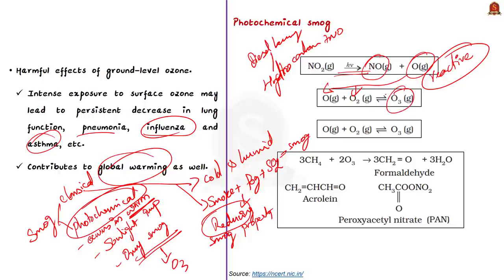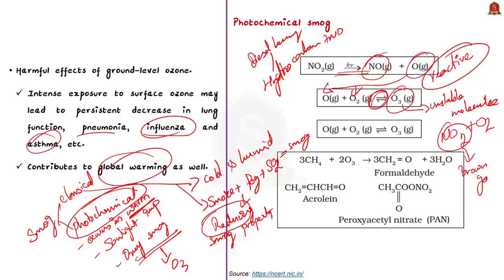Ozone is an unstable molecule, so it can disintegrate back into oxygen. This makes ozone a potential oxidizing agent. The ozone then reacts rapidly with the nitric oxide formed earlier, leading to nitrogen dioxide and oxygen. This nitrogen dioxide is a brown gas, and it is responsible for the characteristic haze in the atmosphere that occurs due to this particular smog. Ozone at ground level is a toxic gas, and both NO2 and O3 are strong oxidizing agents.